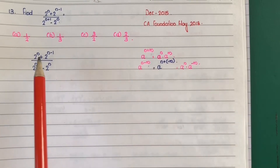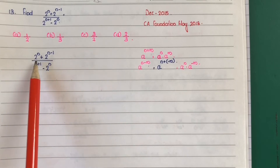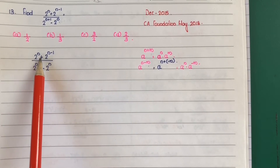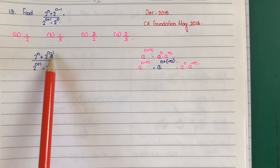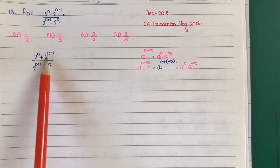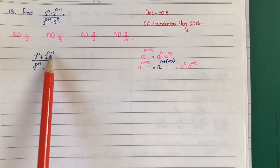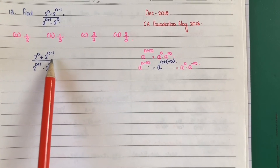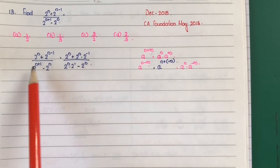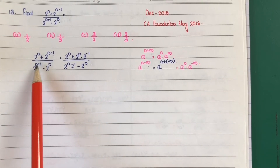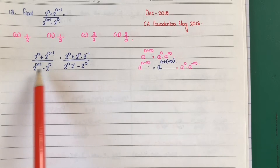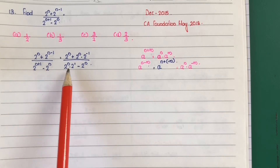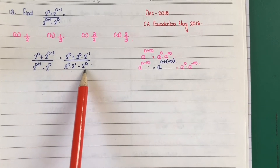Applying this rule, we will solve it. First, the numerator: 2 raise to n plus 2 raise to n minus 1. Here, 2 raise to n minus 1 becomes 2 raise to n into 2 raise to minus 1. The denominator is 2 raise to n plus 1, that is 2 raise to n into 2 raise to 1, minus 2 raise to n.